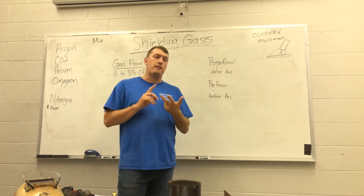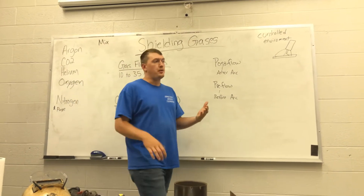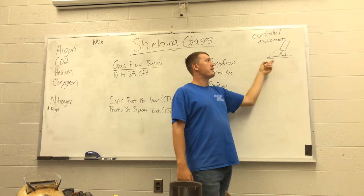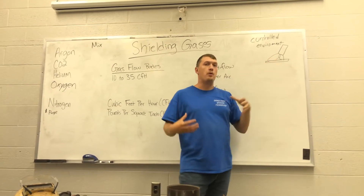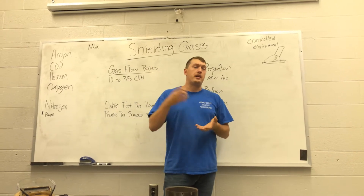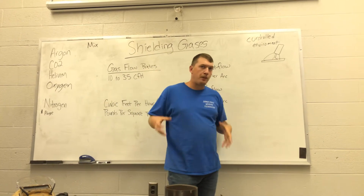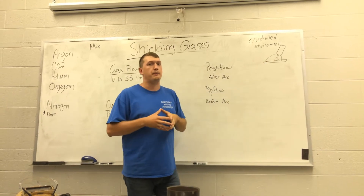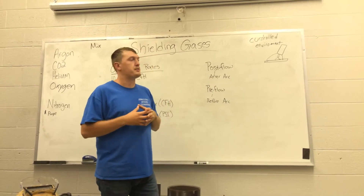We have the TIG process, the MIG process, and the flux core process. So what is shielding gas and what does it do? For example here, we have a TIG torch with some tungsten coming out of it. It's got an arc created that's going down to the base material. What that shielding gas does is it creates an environment — a controlled environment, a bubble or a little cloud — that keeps all the impurities from getting into the weld pool until that weld pool can cool off.